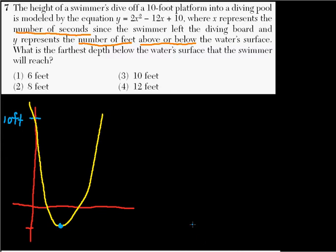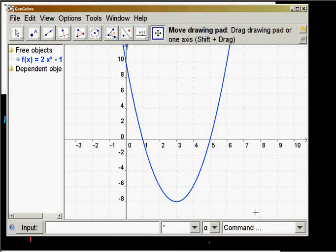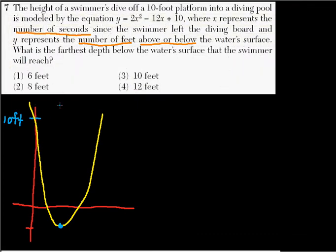Okay, if you have a graphing calculator, you would simply graph 2x squared minus 12x plus 10, and you would get a picture that looks something like this. And if you notice here, there's 10. We trace it down until we get to 8 feet. So it's right here. 8 feet is the minimum depth that the swimmer will reach. And, of course, that's the answer.